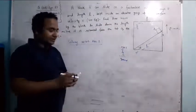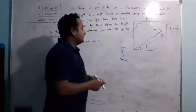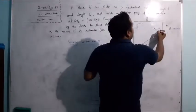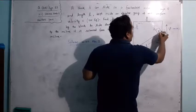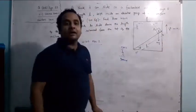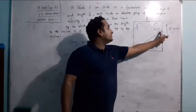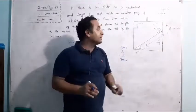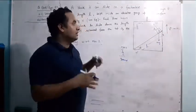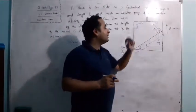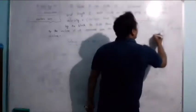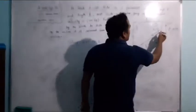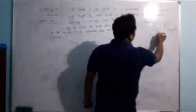Since the observer is moving at constant velocity, there is no acceleration of the frame of reference, so we treat it as an inertial frame. No pseudo force is needed. The forces on the block are: mg acting vertically downward, and normal force from the inclined surface perpendicular to the surface. We will resolve mg along the incline and perpendicular to it.